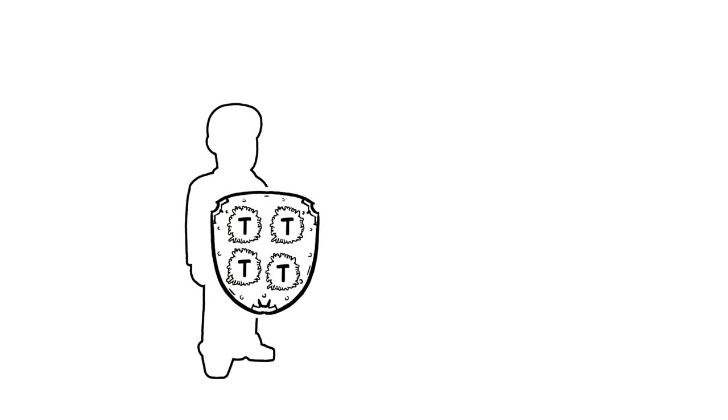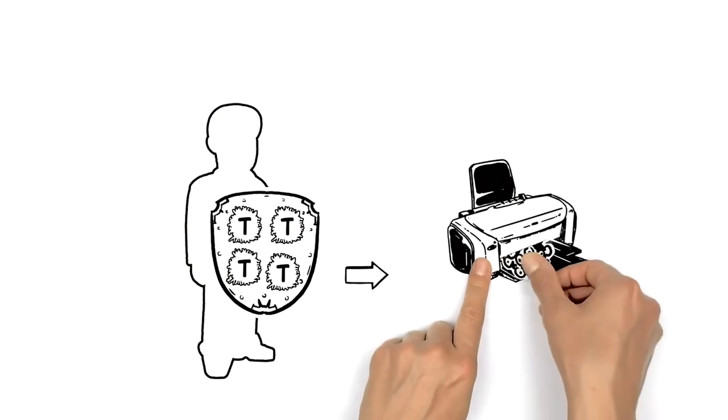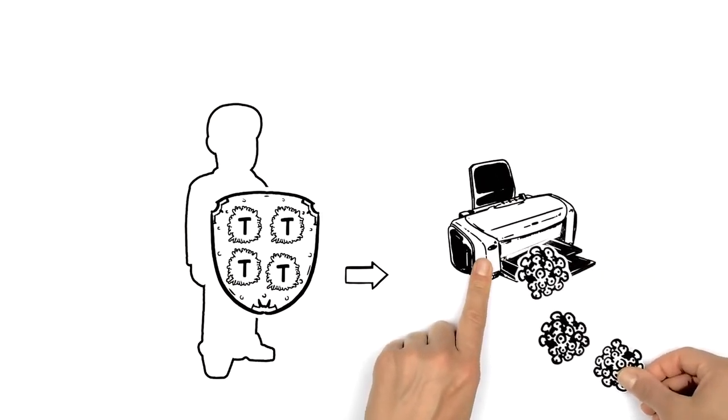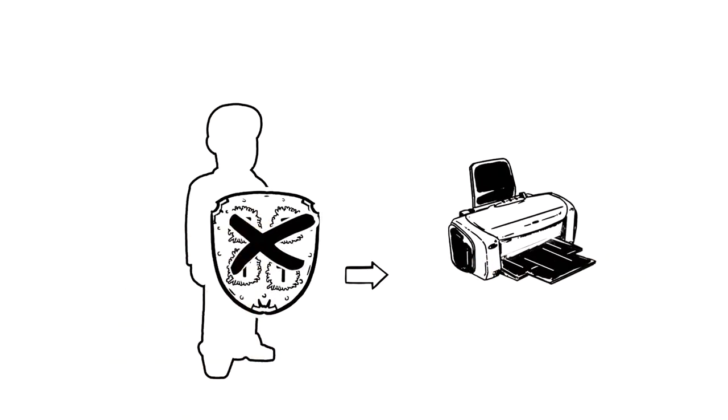But instead of attacking the body, the human immunodeficiency virus, or HIV, attacks those T-cells themselves. It turns them into copy machines to make more copies of itself, then eventually kills the infected T-cells.